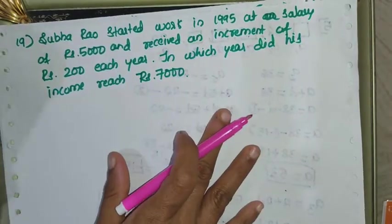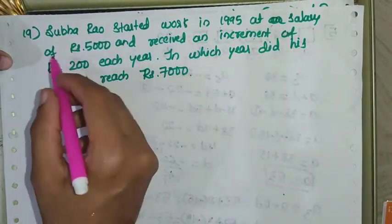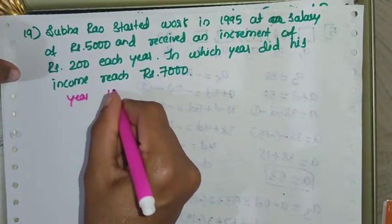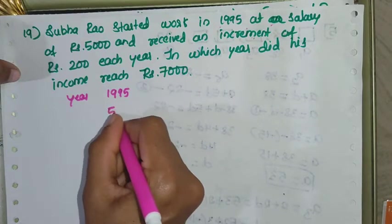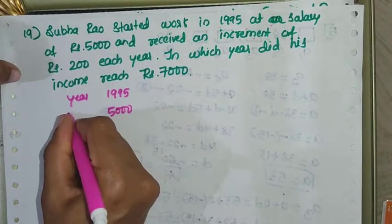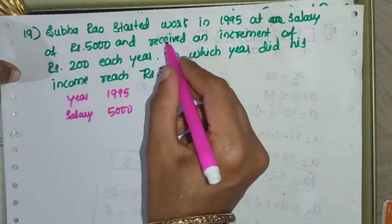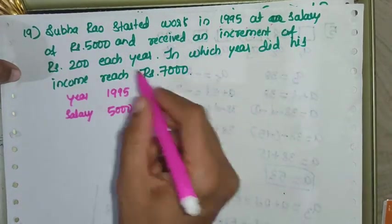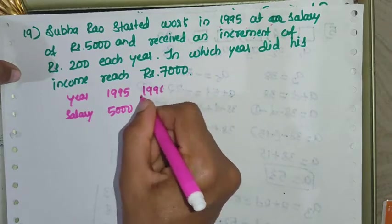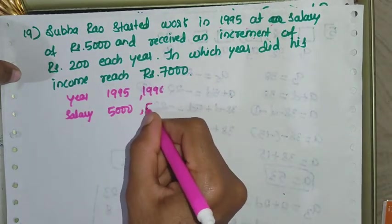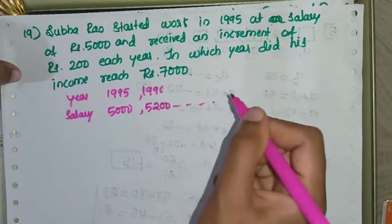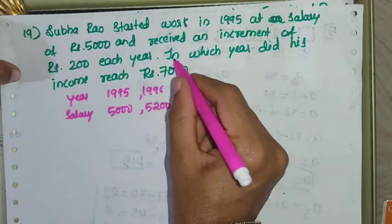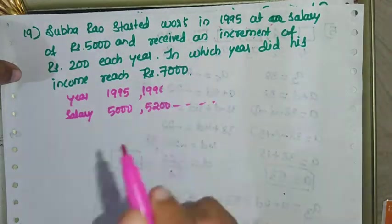Subharao started work in 1995 at a salary of Rs. 5000 and received an increment of Rs. 200 every year. So in 1996 he received Rs. 5200, and every year he receives an increment of Rs. 200. In which year did his income reach Rs. 7000?